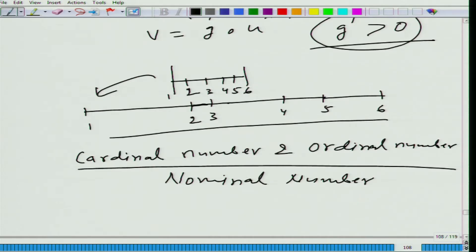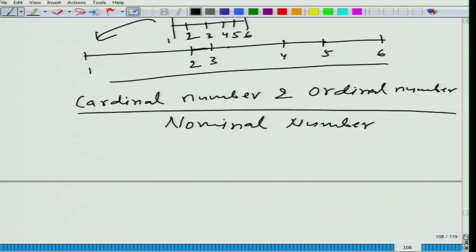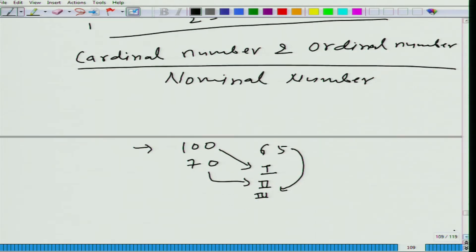The second kind is ordinal. Let's say that 3 people took an exam. The first person got 100 - the maximum marks was 100. The second one got 70 and the third one got 65. So, what we can say is that this person came first, this person came second, and this person came third. Let's say instead of 65 that he had received 60, what would be his rank? Third.